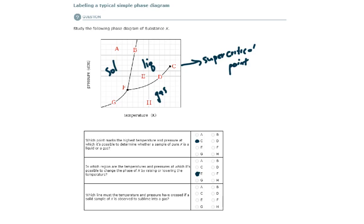So if I go from solid to gas, which boundary or which line must it cross? This line, B? No, that's going from solid to liquid. What about D? No, that's going from liquid to gas. It would have to cross this line, G. It'd have to go from solid to gas. And so the answer here is G.